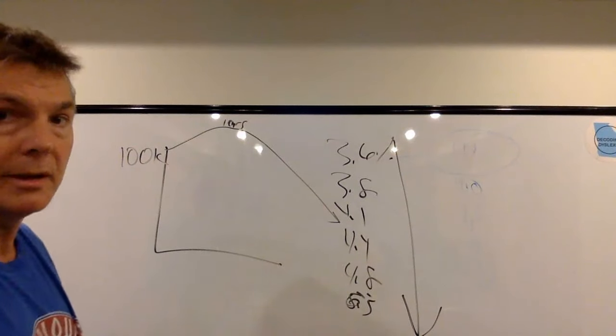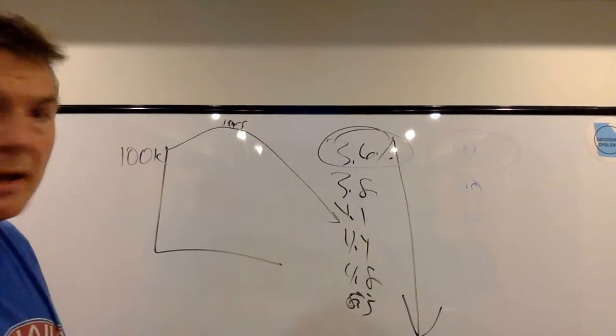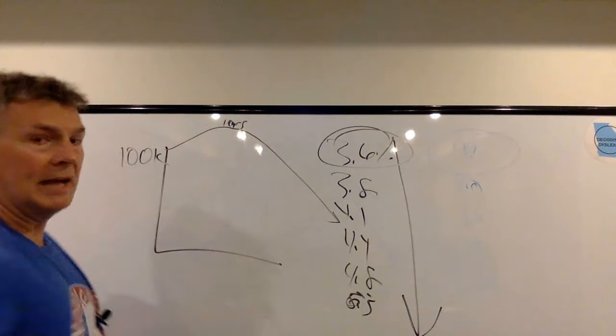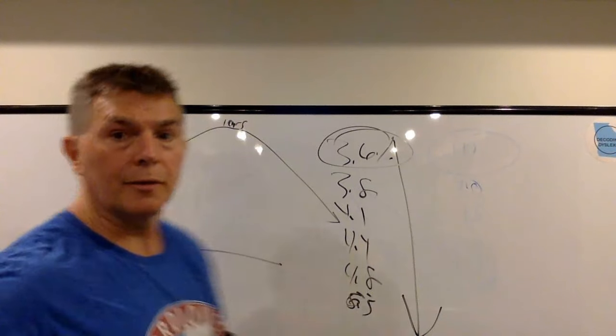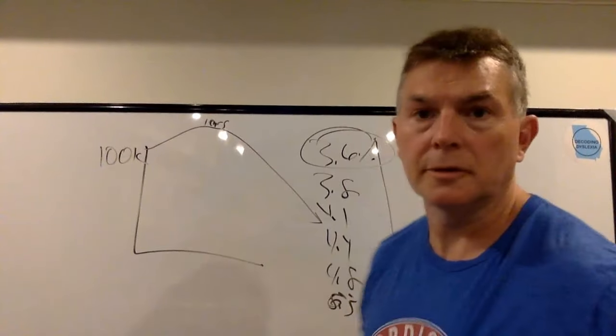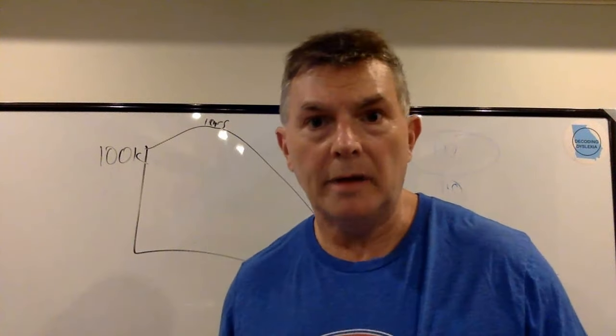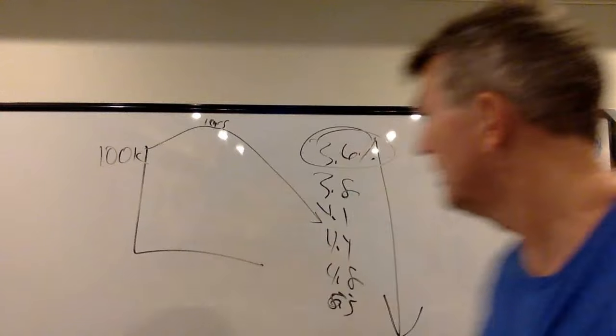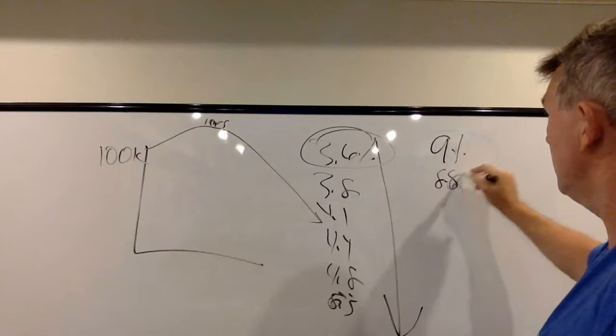So why would we want to take a little bit of your portfolio on the front end while your spending is at the highest it's ever going to be in retirement? We should want to take out a lot in the front end to cover the years where we have the ability and desire to go have fun and party like it's 1999. We should start with 9% and then drop it each year.